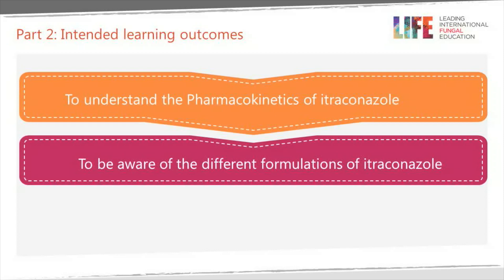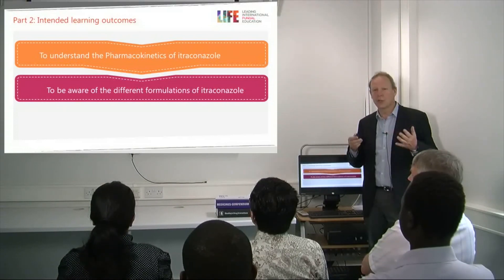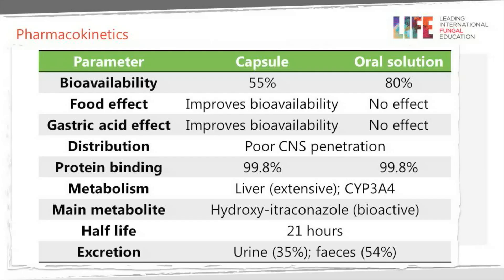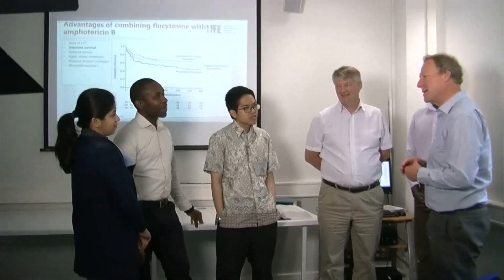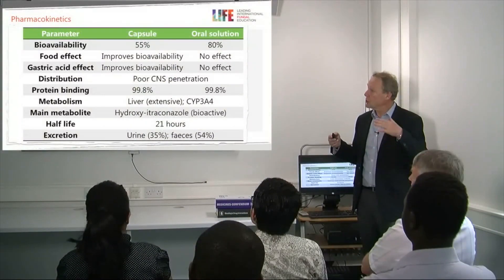Now let's look at the kinetics of itraconazole — how the drug gets into the body and how it's dealt with. There are different formulations with implications for clinical use. With capsules, the most common formulation, bioavailability is just over 50–55%. The solution has much better bioavailability, which is important for AIDS patients, cystic fibrosis patients, patients on H2 blockers, neutropenic patients, and patients with mucositis. There's a significant food effect with itraconazole capsules, which improves bioavailability.